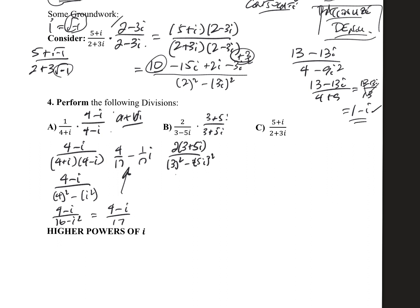So upstairs, we have 6. It looks like plus 10i. And downstairs, we have a 9 minus 25i squared. So upstairs, we have a 6 plus 10i. Downstairs, we have a 9. That's going to be a plus 25. So 6 plus 10i all over 34.